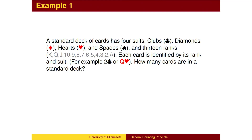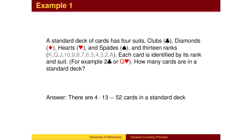Here is an example. A deck of cards has 4 suits, each with 13 values — King, Queen, Jack, on down to Ace. How many cards are there in a deck? To get the answer, multiply 4 times 13 to get 52 cards.